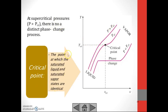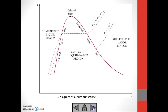The critical point is the point at which the saturated liquid and saturated vapor states are identical. We don't have a separate saturated liquid point or saturated vapor point — they are the same at the critical point. For pressures above P critical, there are no saturated liquid and saturated vapor points.